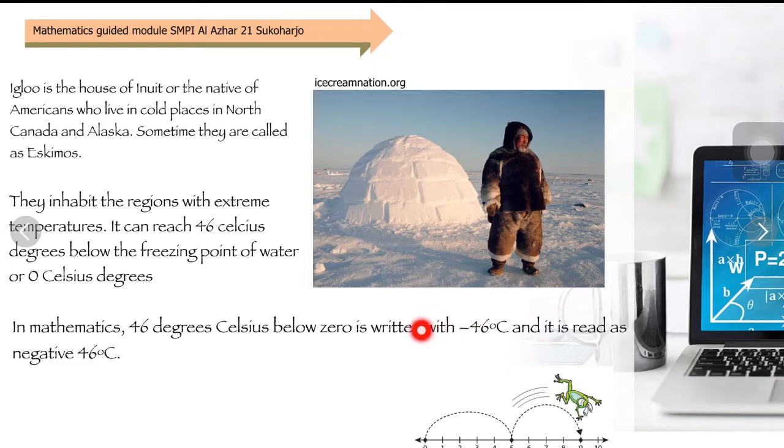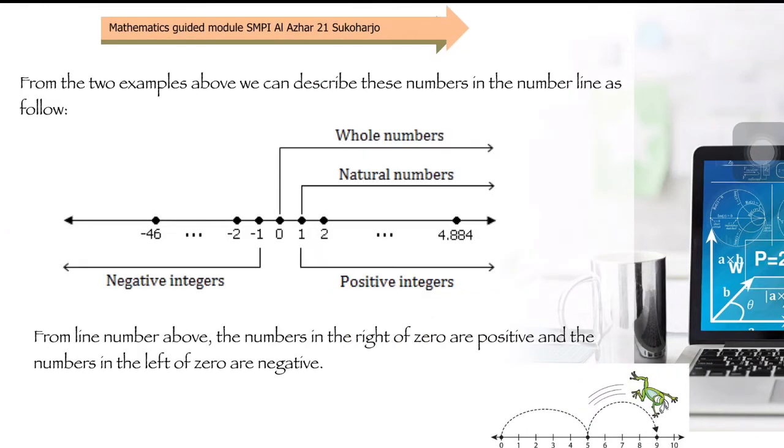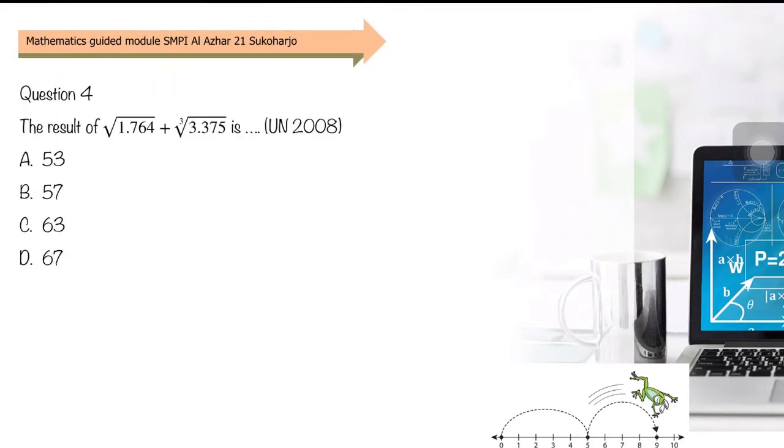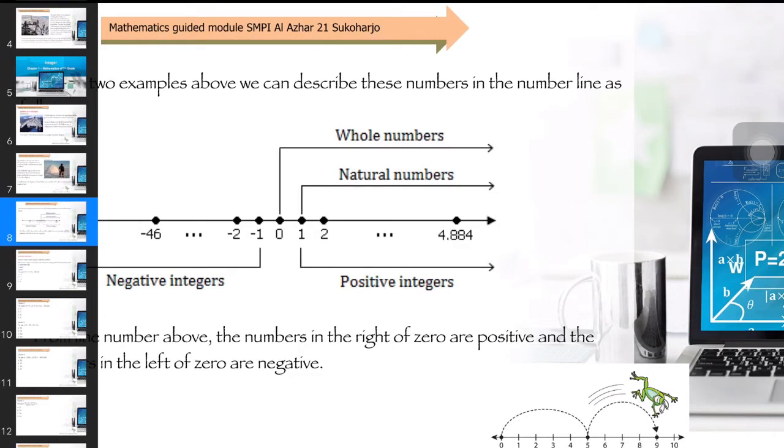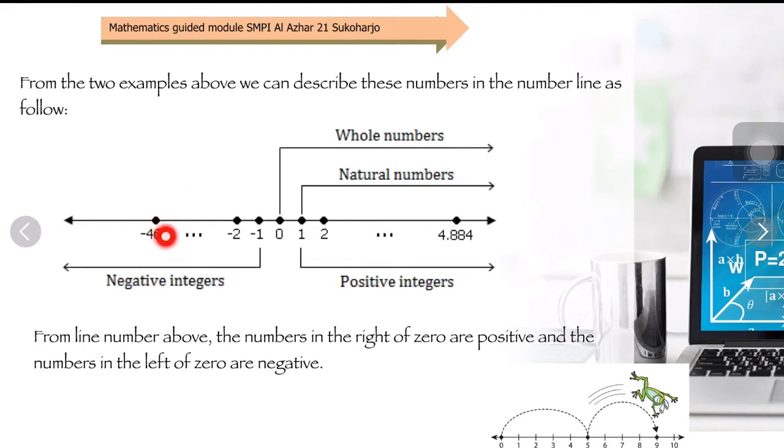If we draw it on a number line, it will look like this. The number line shows negative 46 to negative 2, negative 1, 0, 1, 2, and so on. These are integers. What you need to know is that the further right on the number line, the greater the value. For example, between negative 2 and negative 1, negative 1 is greater because it is to the right of negative 2. Zero is greater than negative 1, and so on.